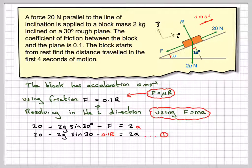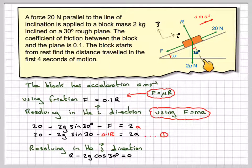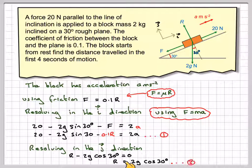If we now resolve in the j direction, then we're going to have r minus 2g cos 30 degrees, so the component here which is 2g cos 30, and that equals 0 because these are in balance, no acceleration this way. So we get that r equals 2g cos 30, and we'll call that equation 2.